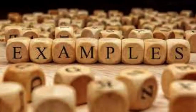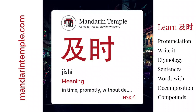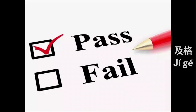Now let's see some examples. Yí Jí — 'and' or 'as well as.' Jí Shí — 'timely' or 'in time.' Hù Jí — 'make universal.' Jí Gé — 'pass a test or examination.'